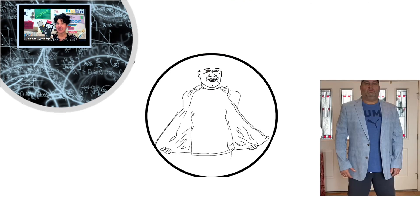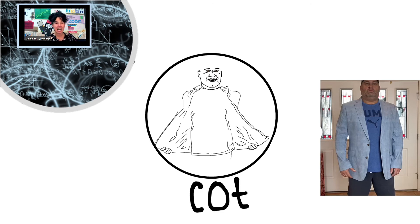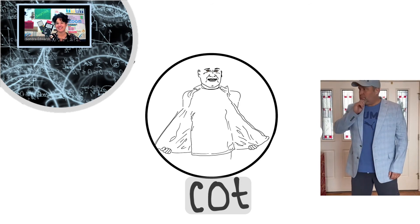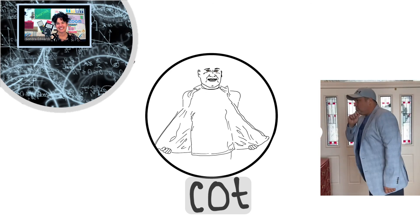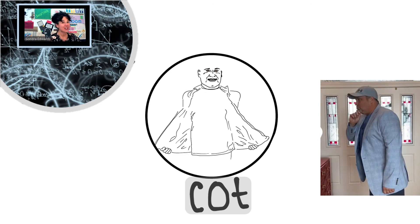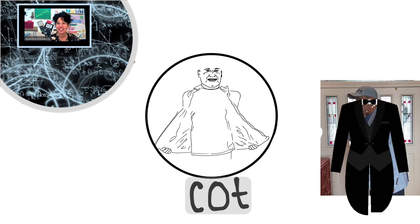The next one — here he is in his snazzy blazer. This is going to help us remember that cotangent is on the bottom. His coat is not as fancy, but coattails — coattails are on the bottom. So far we have tan up top and cotangent on the bottom.